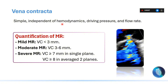The vena contracta is independent of hemodynamics, which means it is less affected by blood pressure and less dependent on the driving pressure and the flow rate. Now, how do we assess or quantify mitral regurgitation using the vena contracta? We have to memorize these numbers.